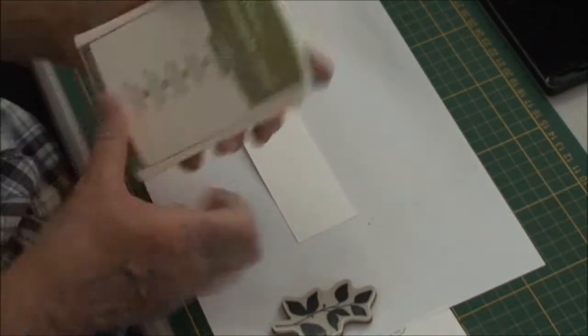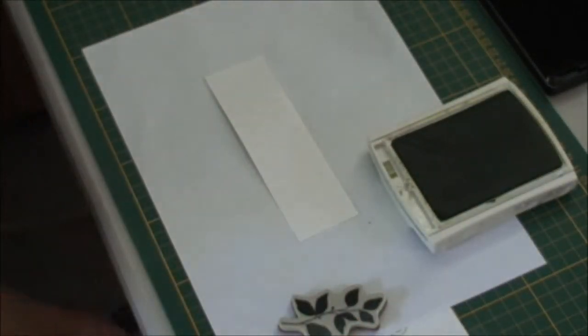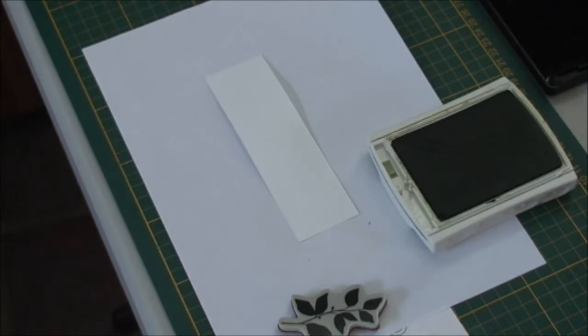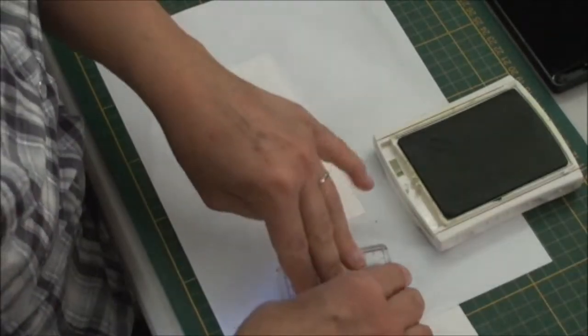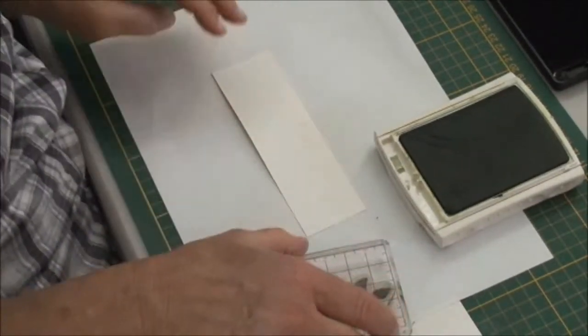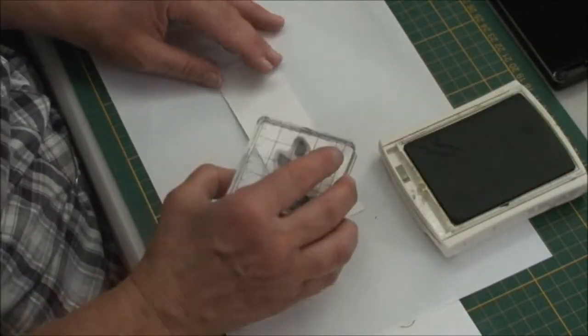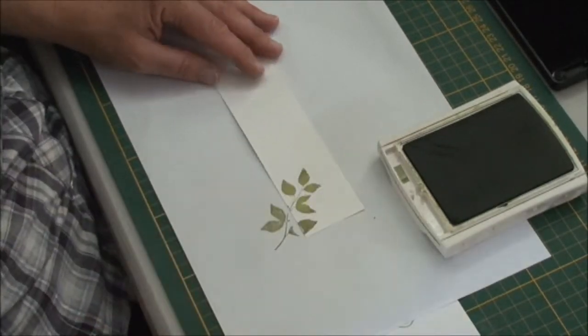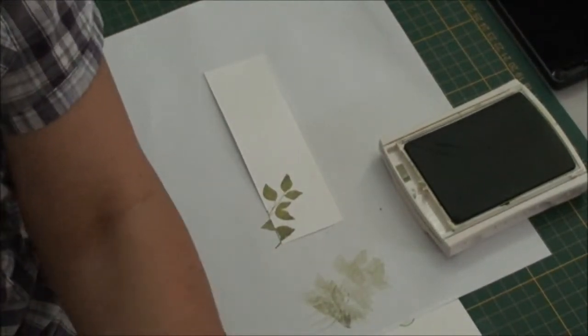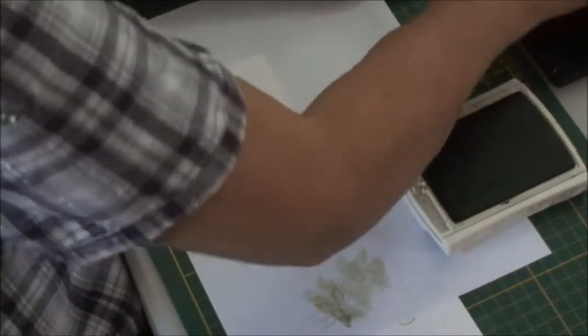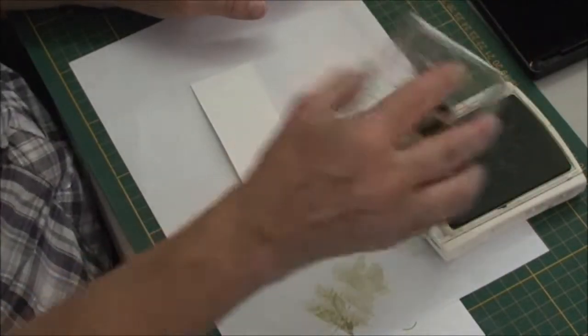So I'm just using old olive ink to get myself a block to use. Just using the leaves from the stamp set and just stamp off the design. And like I said, make sure you clean it between each use or it will pick up the white ink and then spread it everywhere.